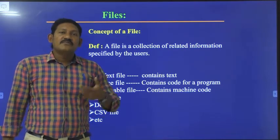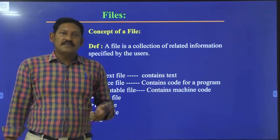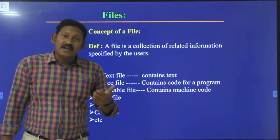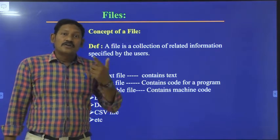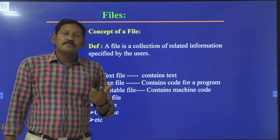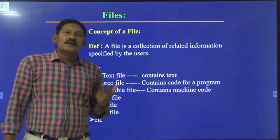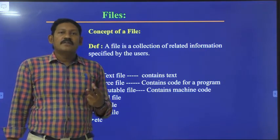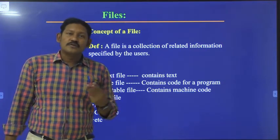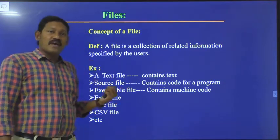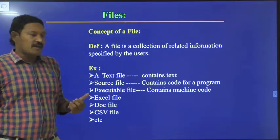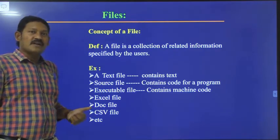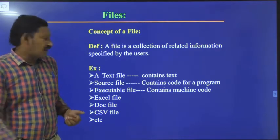We have different varieties of files like text file, doc file, source file, executable file, CSV — comma separated values — file, etc.